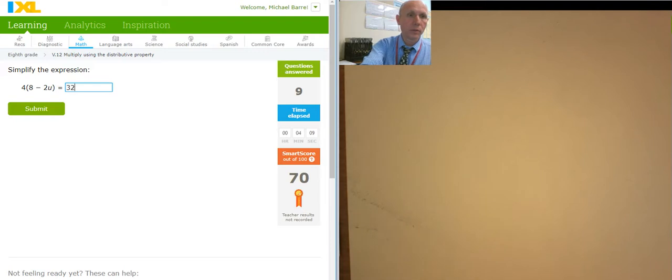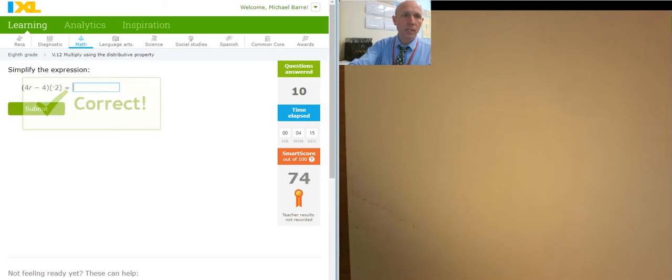This one, what's that? 32 minus 8U. I'm looking for something different to happen up here. Negative 8R plus 8. Seeing if IXL is going to give us anything weird.